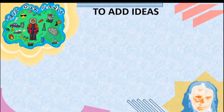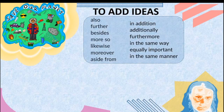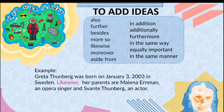Next function: to add ideas. Transition signals include: also, further, besides, moreover, likewise, aside from, in addition, additionally, far more, in the same way, equally important, in the same manner. Example: Greta Thunberg was born on January 3, 2003, in Sweden. Likewise, her parents are Malena Ernman, an opera singer, and Svante Thunberg, an actor. The first sentence gives her birthday and birthplace; then we add another idea about her parents. 'Likewise' is the transition device, and the function is to add ideas.